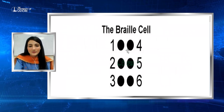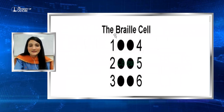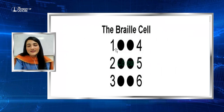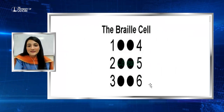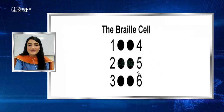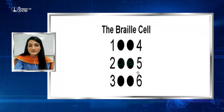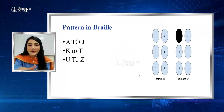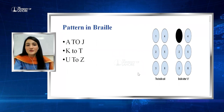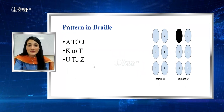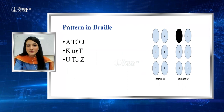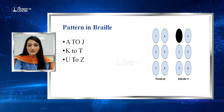Again, this is the Braille cell with six dots: 1, 2, 3, 4, 5, 6. There are three patterns in Braille: A to J, K to T, and U to Z.